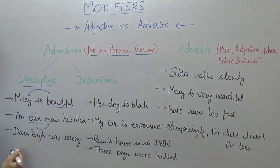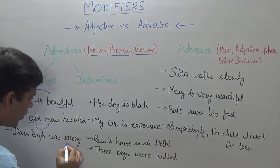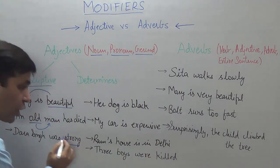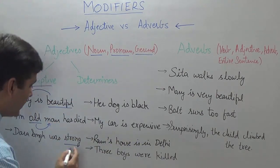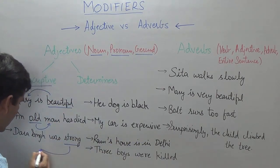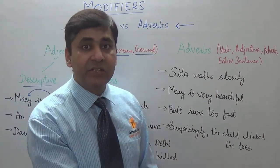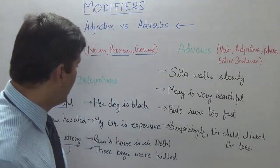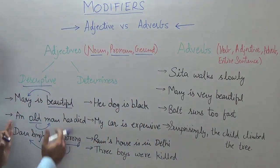Similarly, 'Dara Singh was strong.' The word 'strong' is giving additional information about Dara Singh — it is describing his strength. So these are descriptive adjectives.